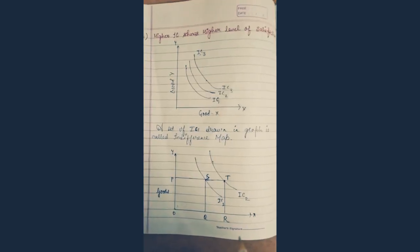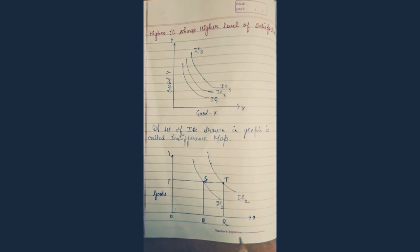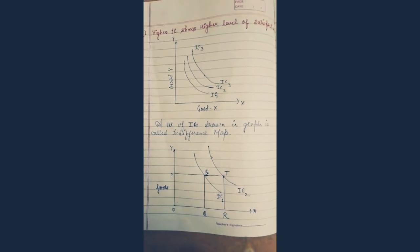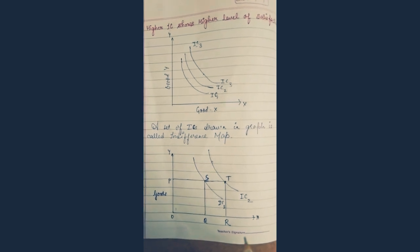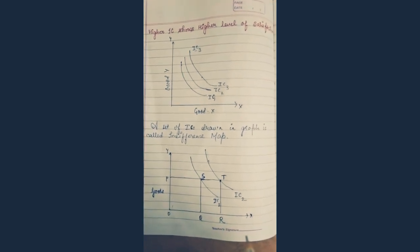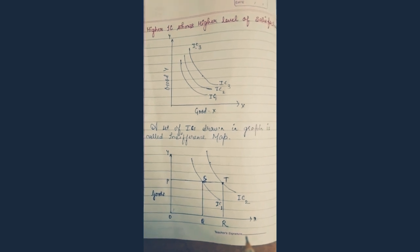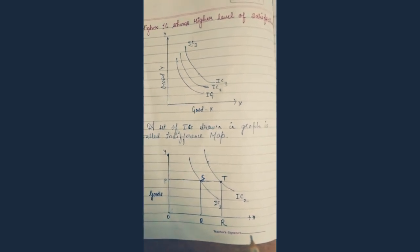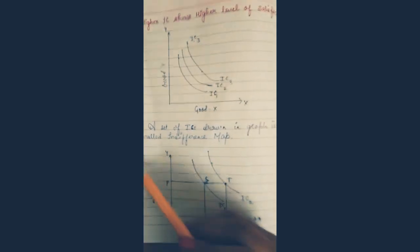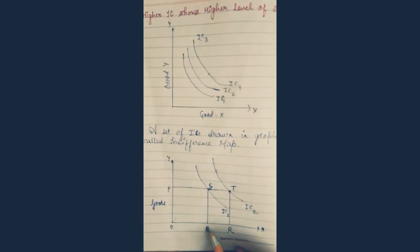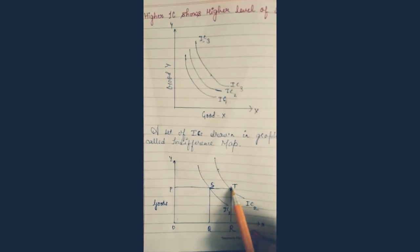The third property is that higher IC shows higher level of satisfaction. In the first diagram, three ICs are shown: IC1, IC2, and IC3. A set of ICs drawn on a graph is called an indifference map. To understand why higher IC shows higher satisfaction, look at the second diagram: the amount of good OP is constant at both points S and T. On the Y-axis the amount is OP; IC1 corresponds to point S at OQ, and IC2 corresponds to point T.